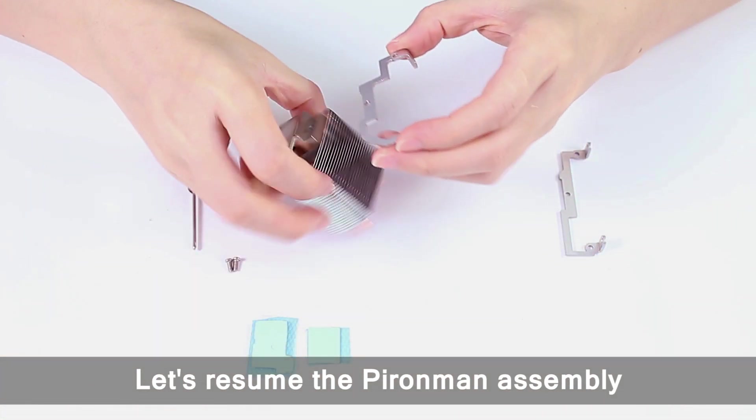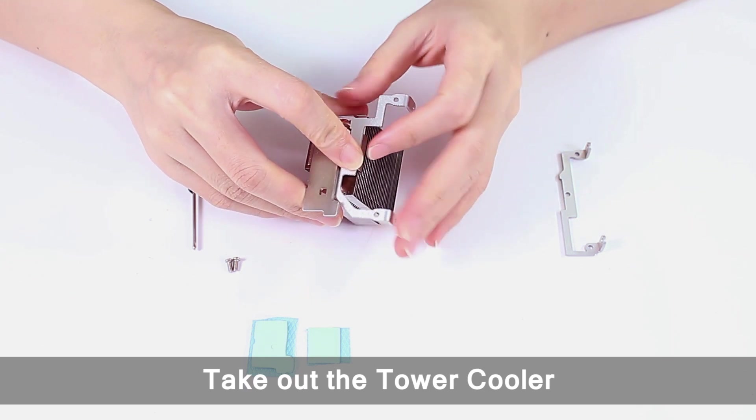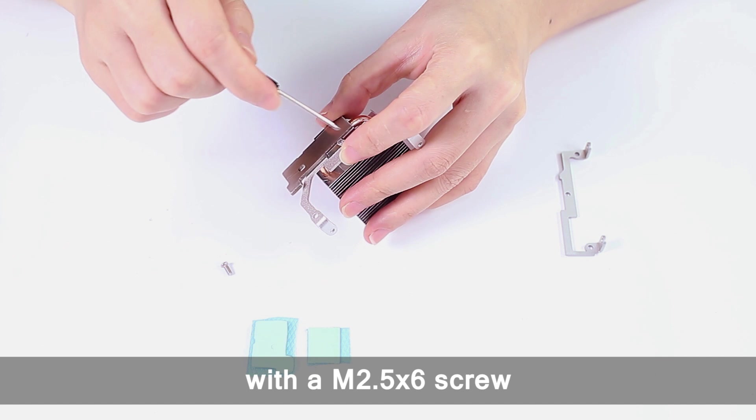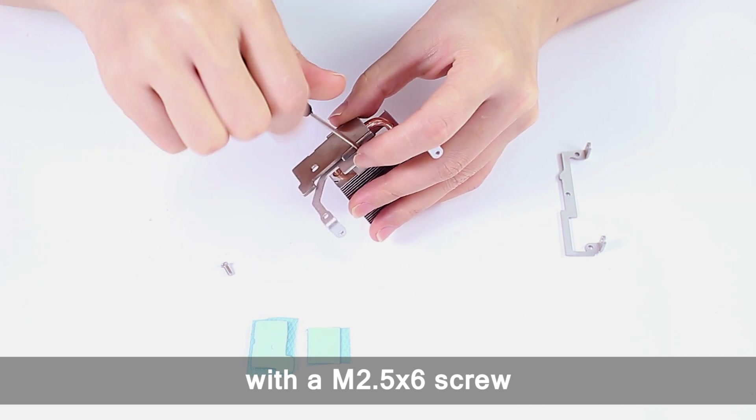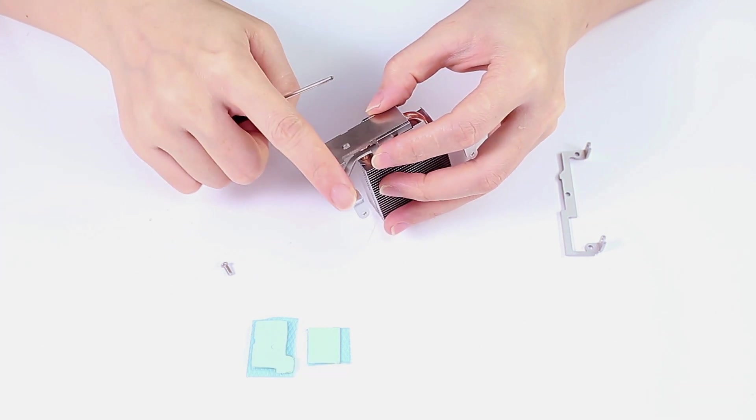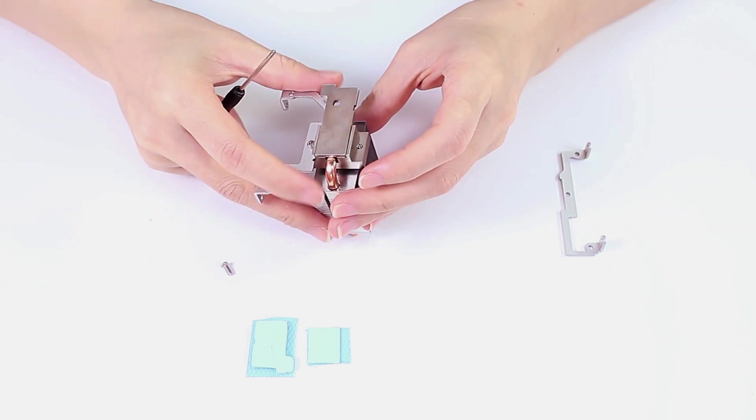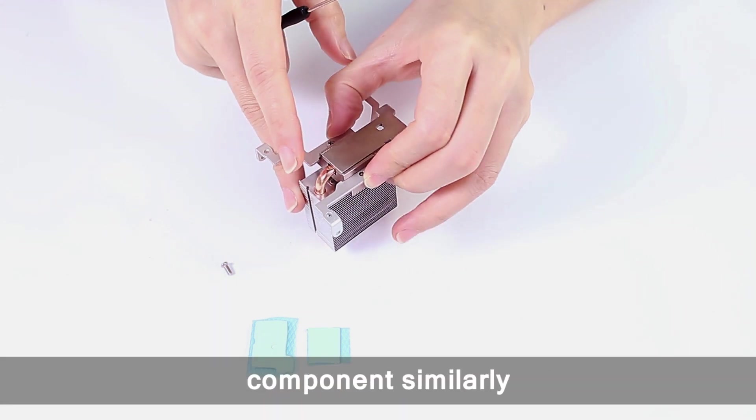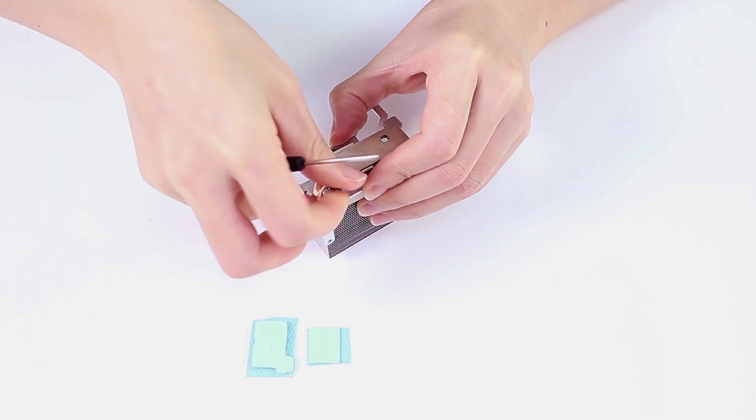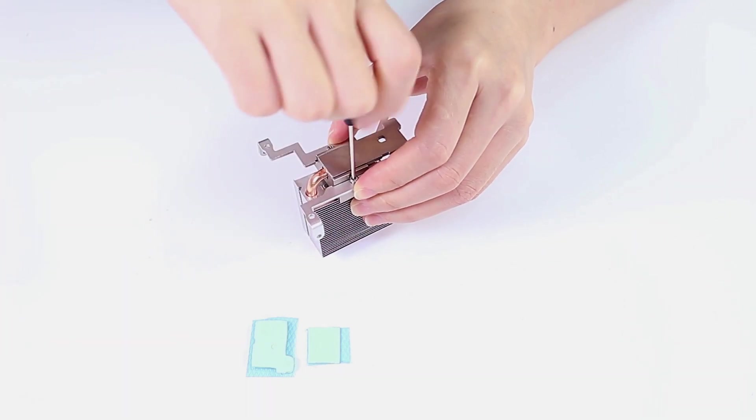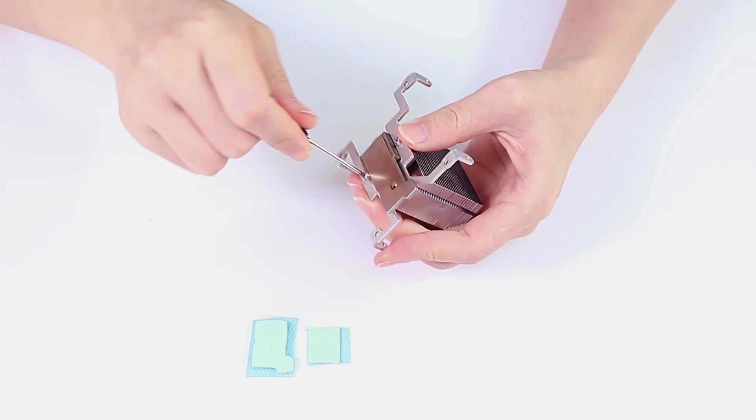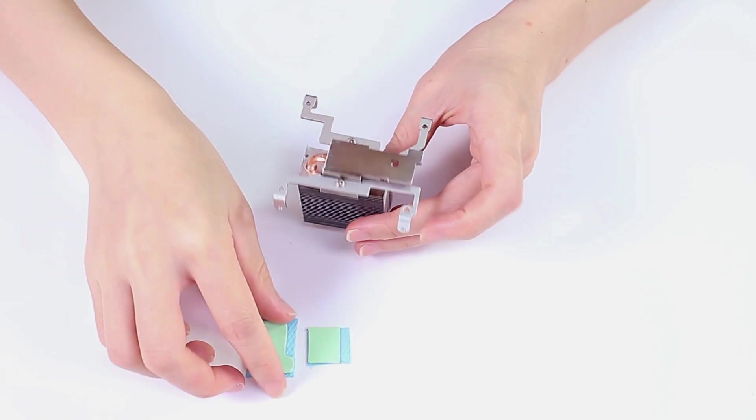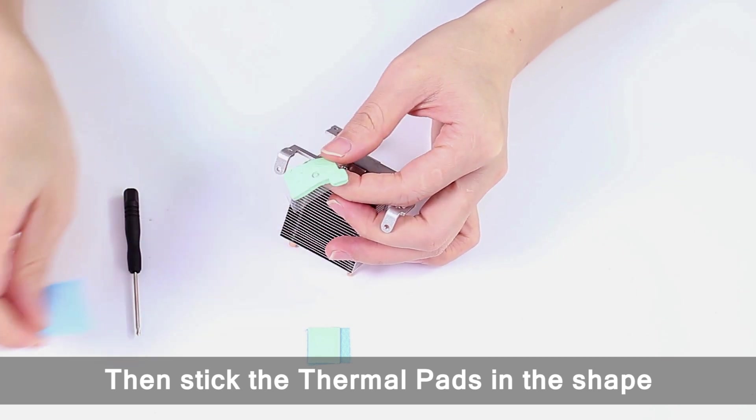Let's resume the Pyramin assembly. Take out the tower cooler and attach a structural part to it with a M2.5 by 6 screw. Secure the second structural components similarly. Then stick the thermal pads in the shape.